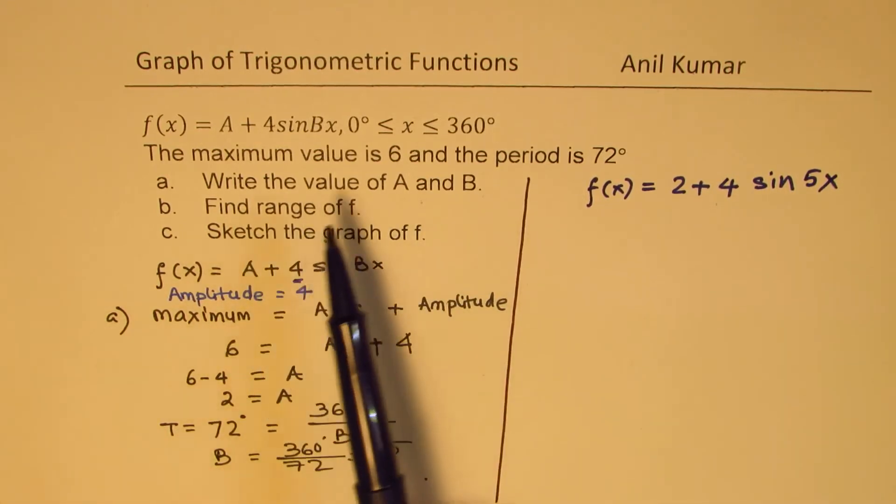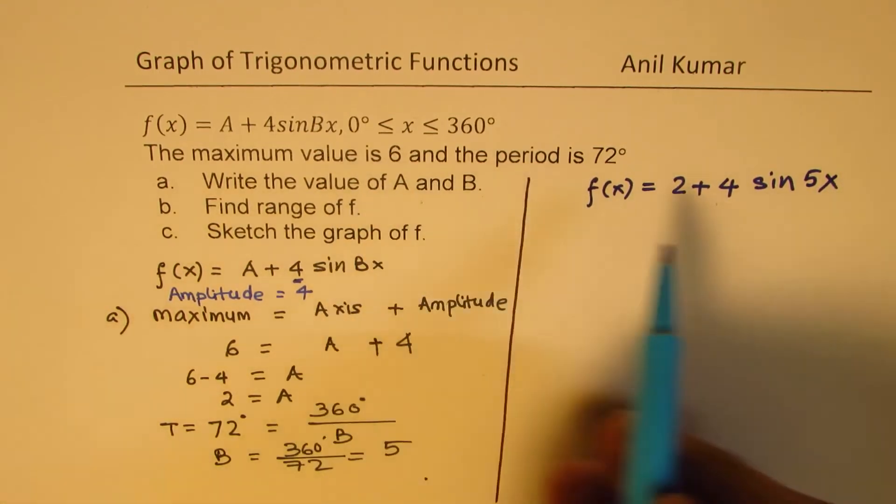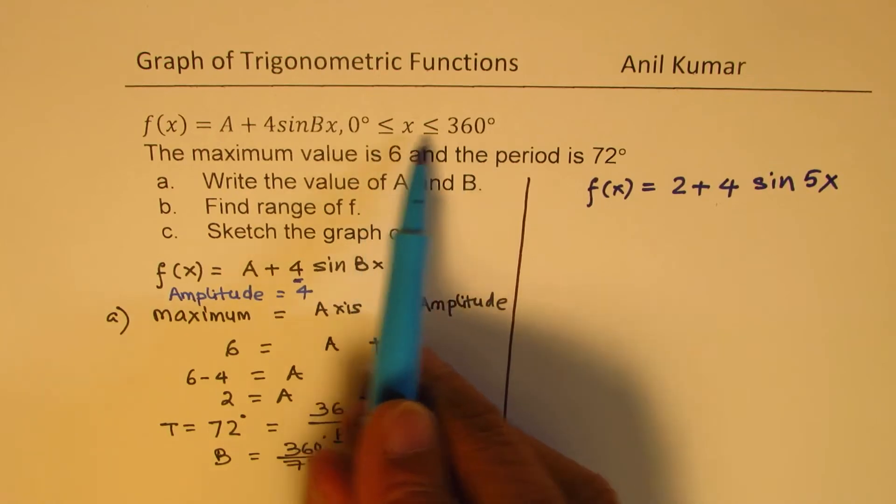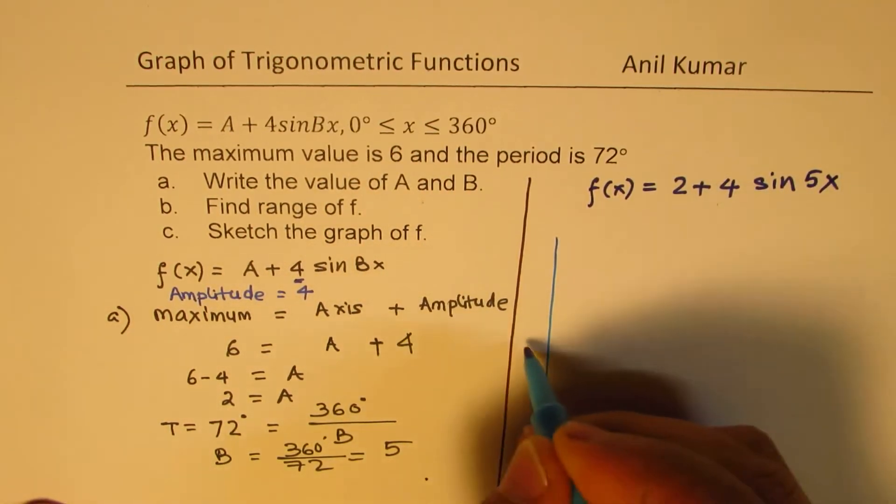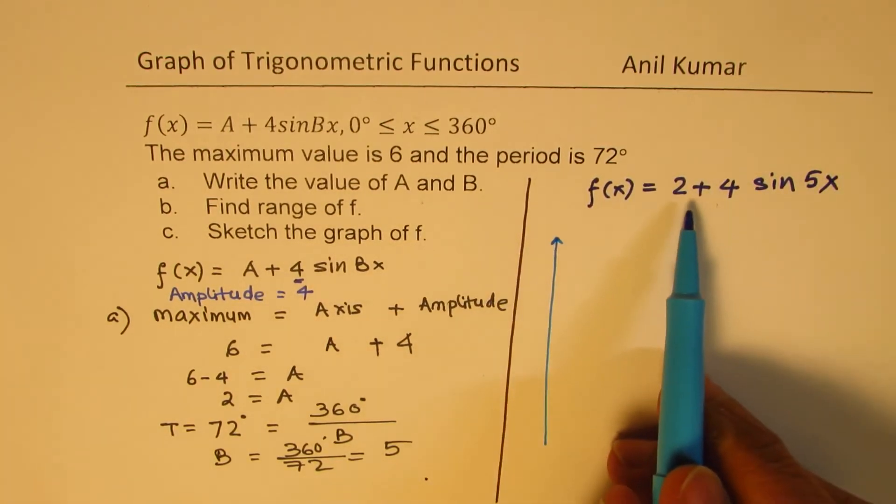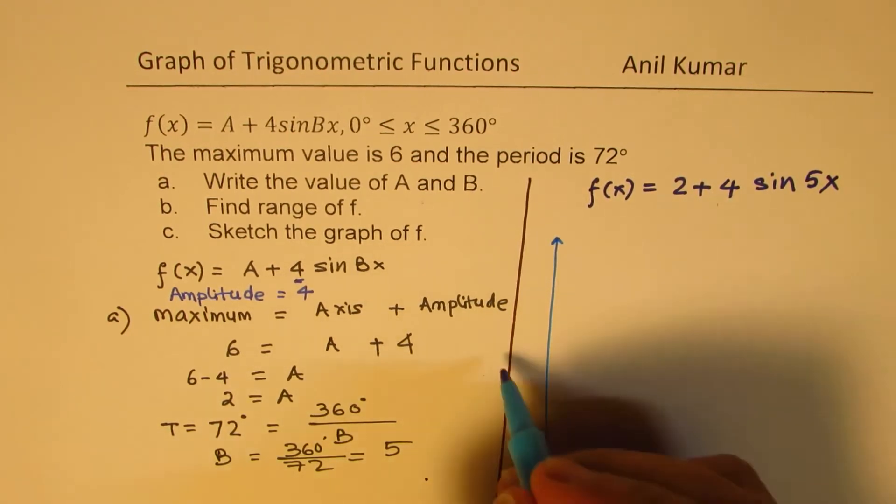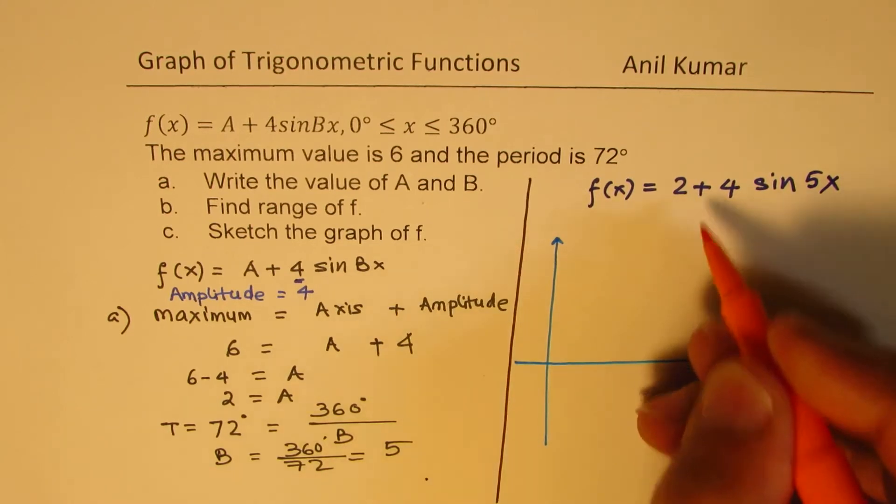We need to sketch graph of this function, f(x). Now, to sketch graph of this within a period of 0 to 360, that is the given, so let's just draw the axis. This is the y-axis for us. Now, it shifts two units up, and then we have amplitude of 4.